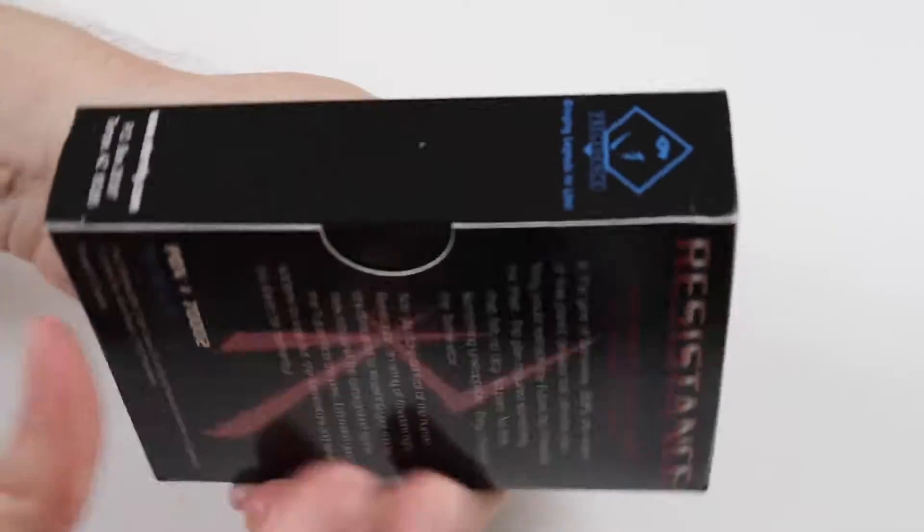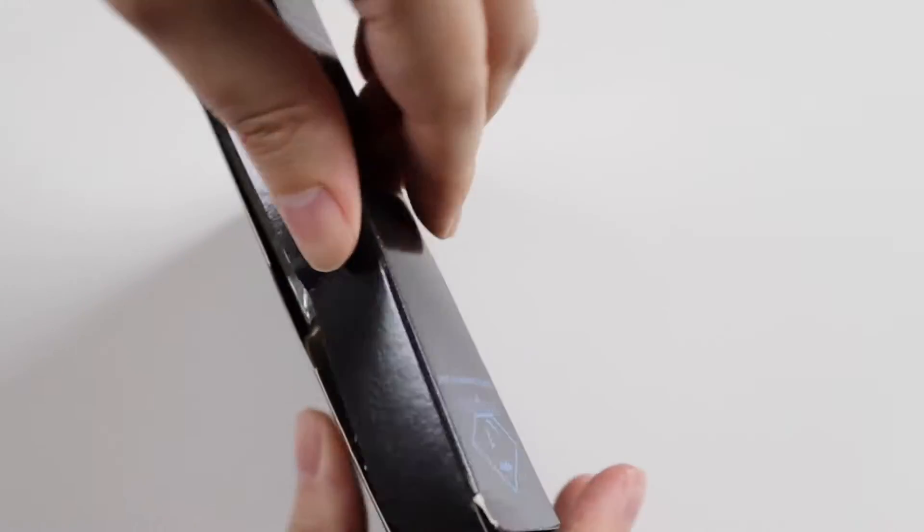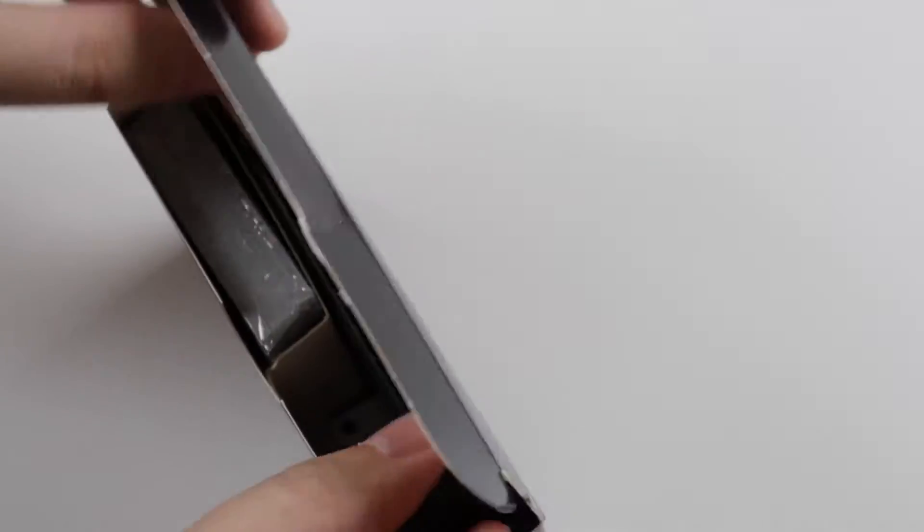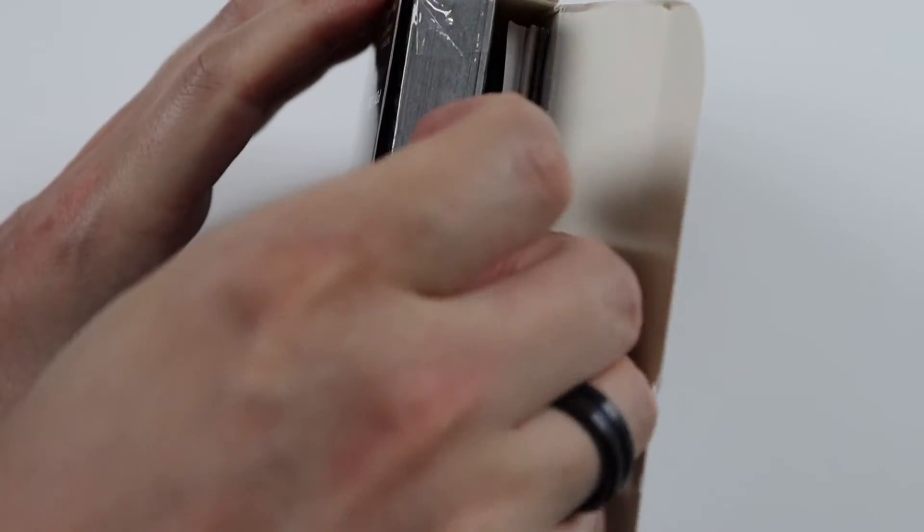So inside the deck let's see what we get. It sounds a bit loose inside. So it looks like the Babylon 5 one. You've got the cards there.